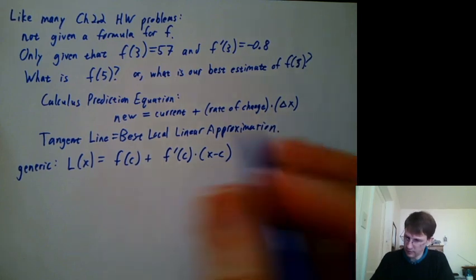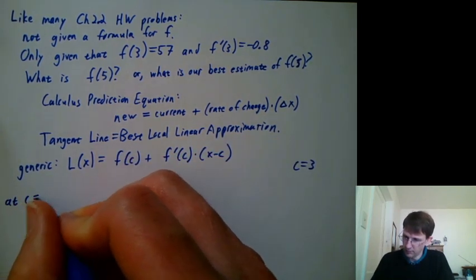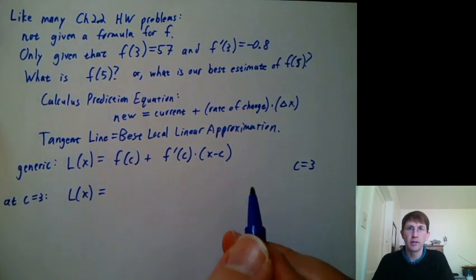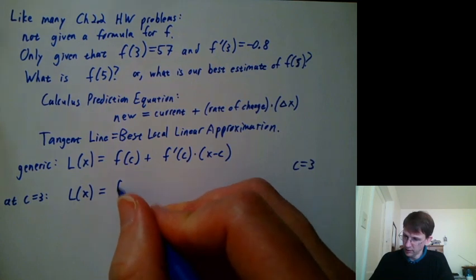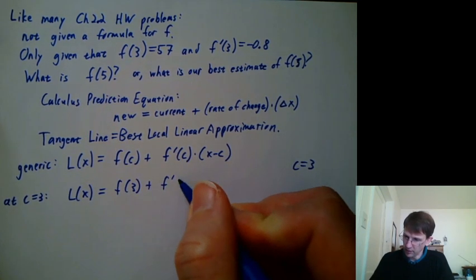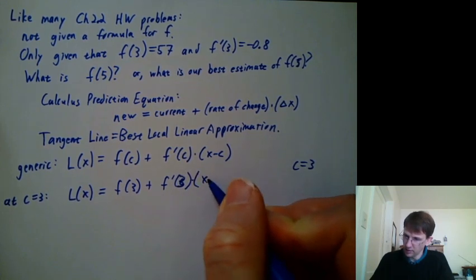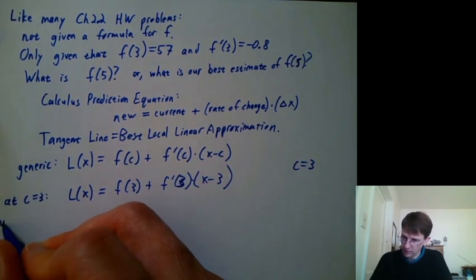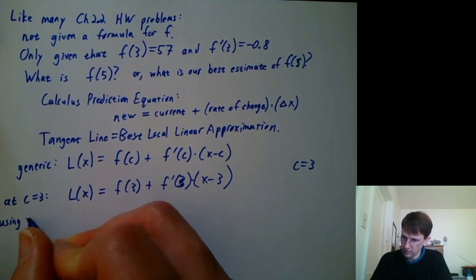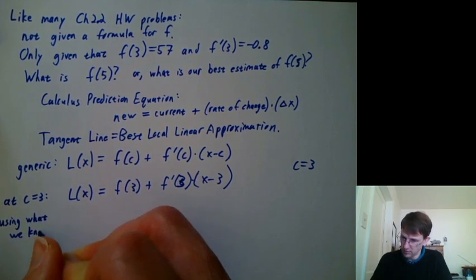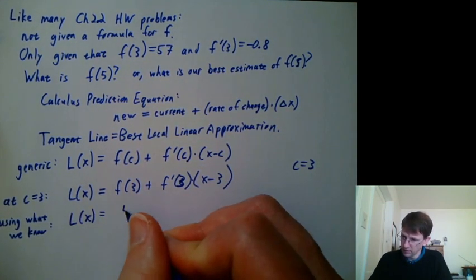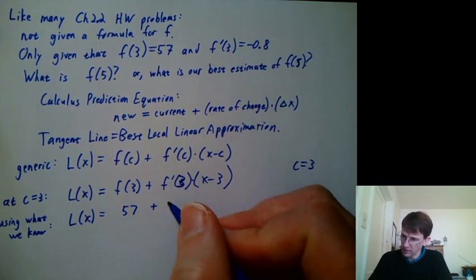So let's specialize it to 3. So we'll say L of x. Try to rewrite this specialized to c equals 3. So it would be f of 3 plus f prime at 3 times x minus 3. And then let's specialize it to what we know. We know f of 3 is 57. We know f prime of 3 is negative 0.8.